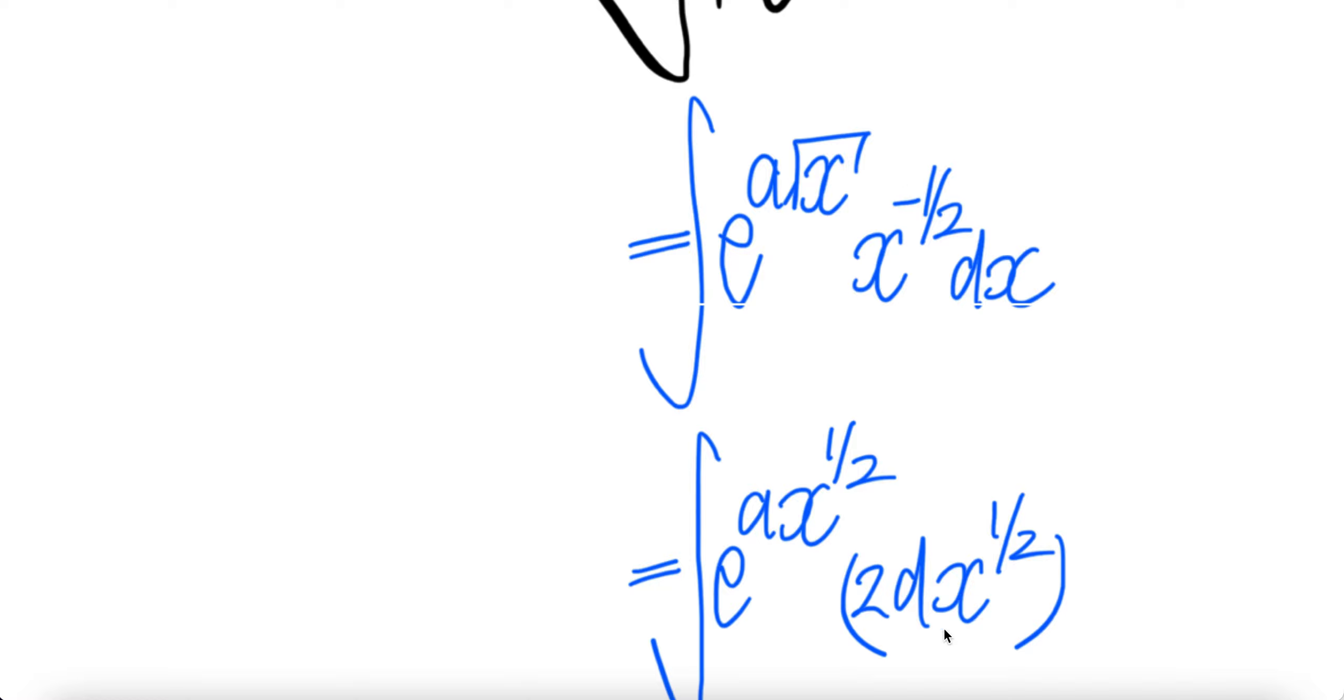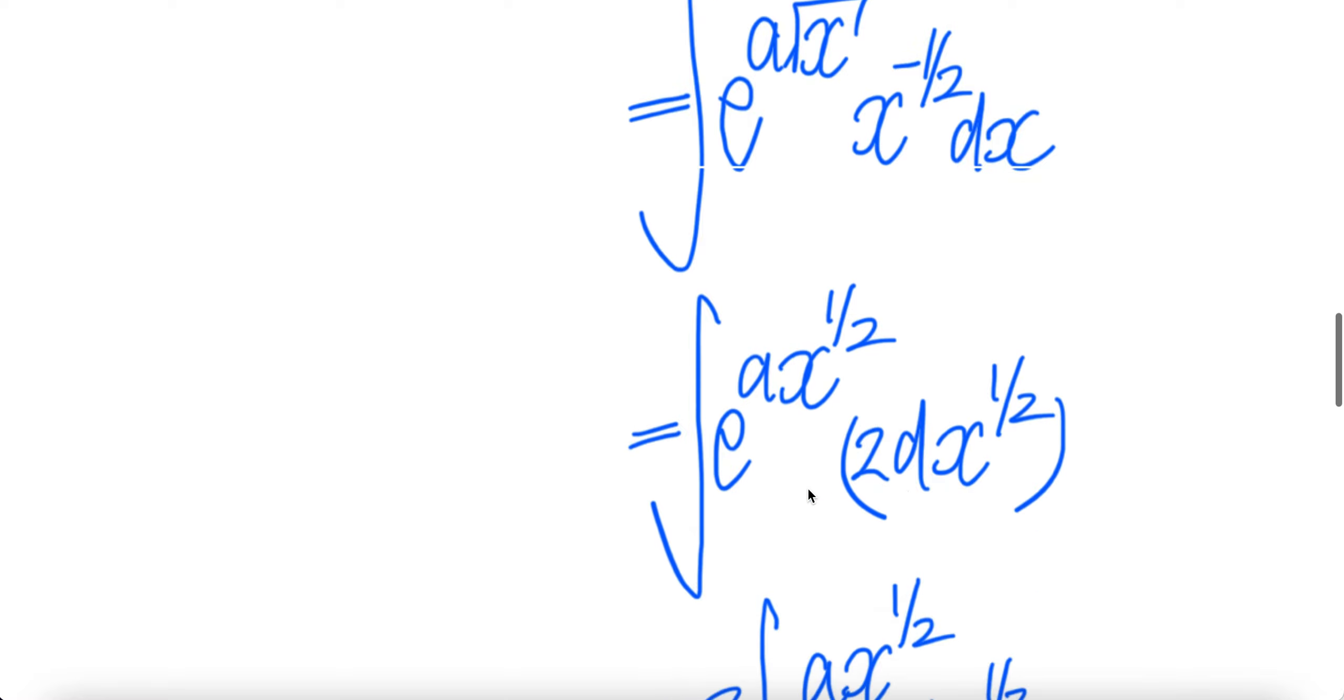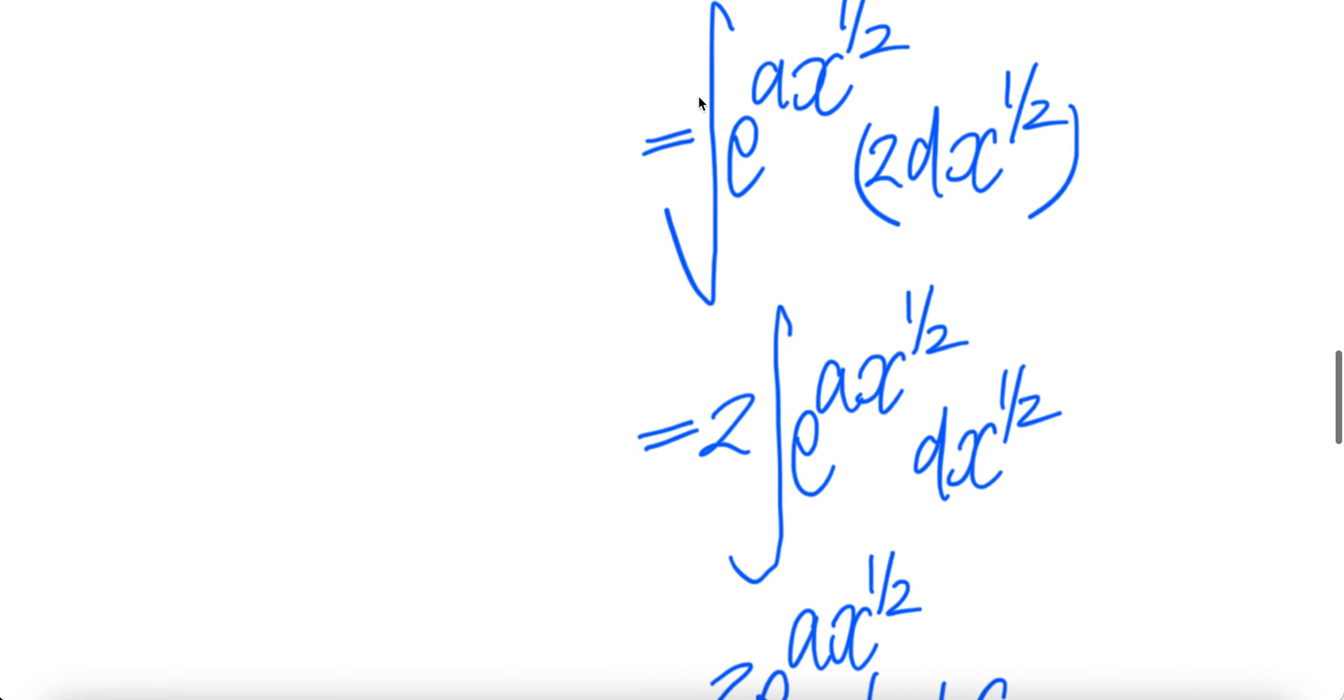So basically this is the same thing as that. And write this as x to the power of negative half. Now two constants out of the integral.